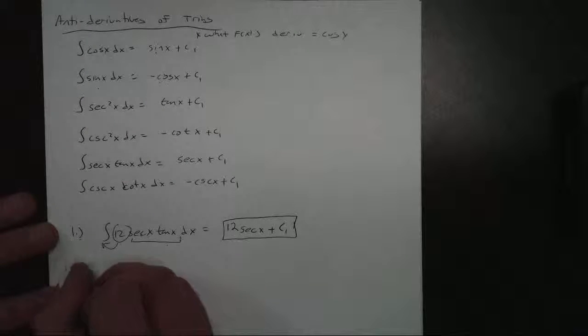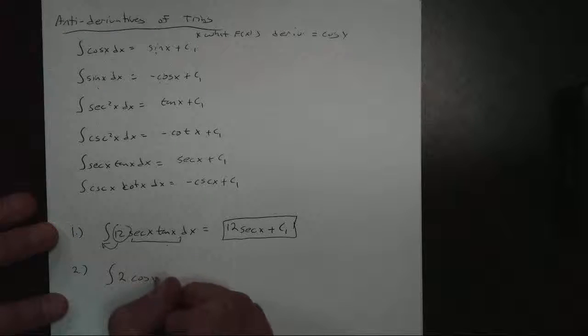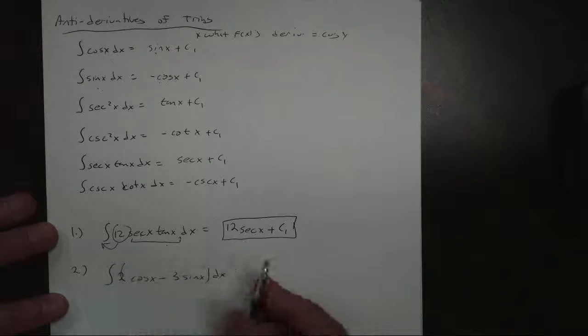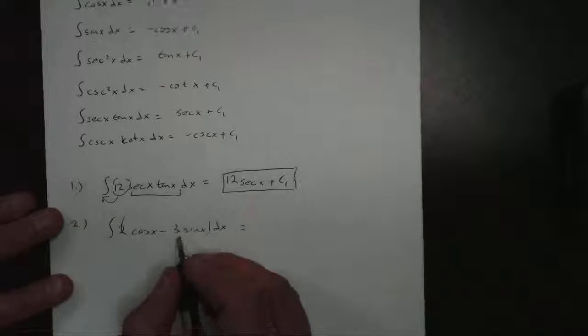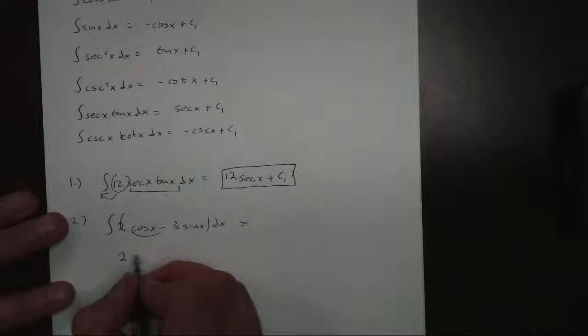Number two, let's say I have something like this. Two cosine of x minus three sine of x dx. And should put that in parentheses, I guess. Same idea. I'll go down here below. So this becomes just a two. What function's derivative is cosine?